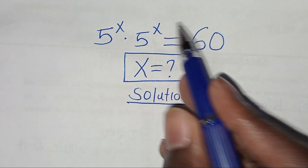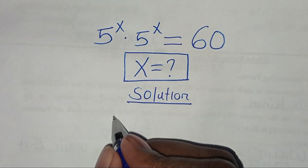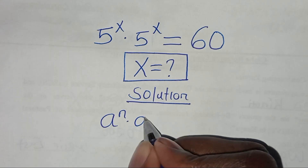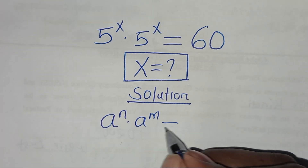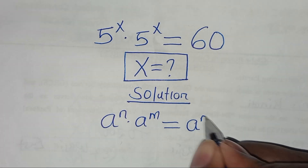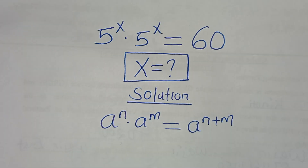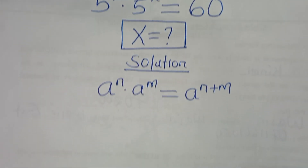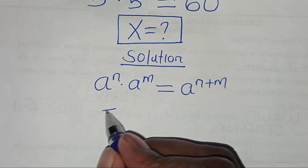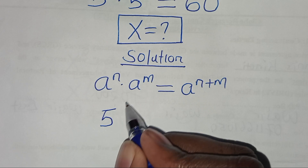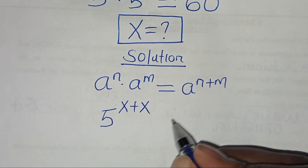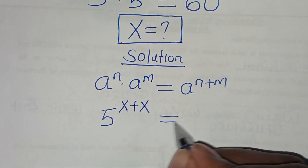This exponential equation is in the form of a to the power n times a to the power m, which we can express as a to the power n plus m. So applying this exponent property, here we have 5 to the power x plus x, which is equal to 60.